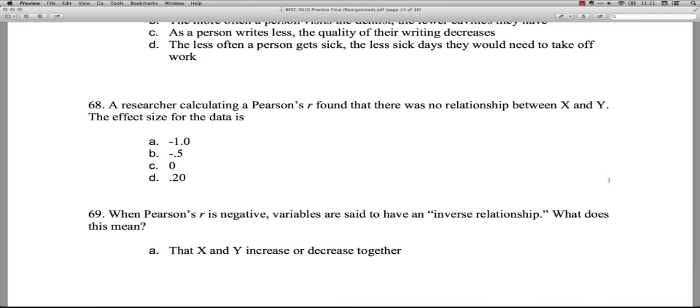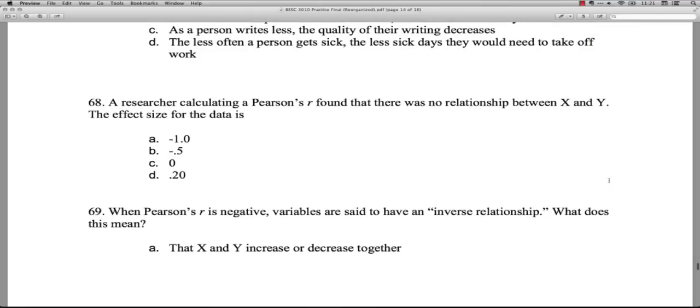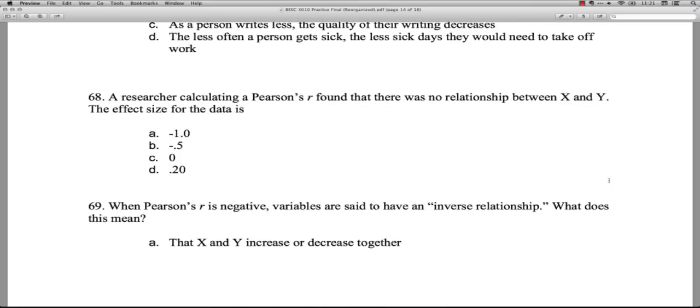Question 68: A researcher calculating a Pearson R, that's a correlation coefficient, found that there was no relationship between X and Y. So again, like between high school and college GPA. The effect size for the data is not negative one. That'd be a perfect negative correlation. Negative five? No. C, zero. The effect size we're using here is probably R or R squared and, yeah, it'd be a correlation of zero. So C is the correct answer for this one. And 0.20 is just another non-zero value.